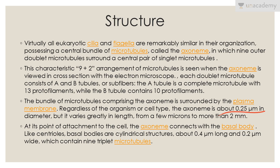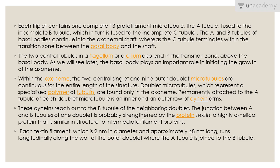At its point of attachment to the cell, the axoneme connects to the basal body. Like centrioles, basal bodies are cylindrical structures about 0.4 micrometers long and 0.2 micrometers wide, containing nine triplet microtubules. Each triplet contains one complete 13-protofilament A tubule fused to the incomplete B tubule, which is in turn fused to the incomplete C tubule. The A and B tubules of the basal body continue into the axonemal shaft, whereas the C tubule terminates within the transition zone.